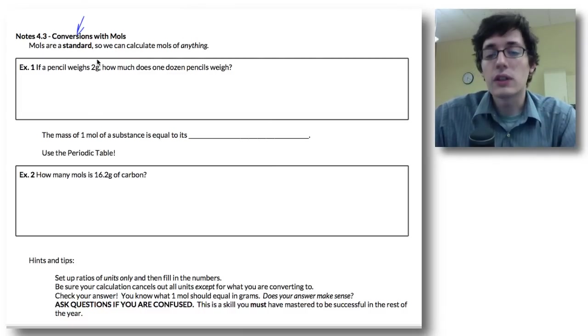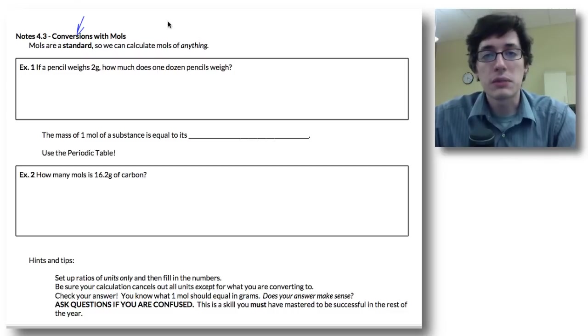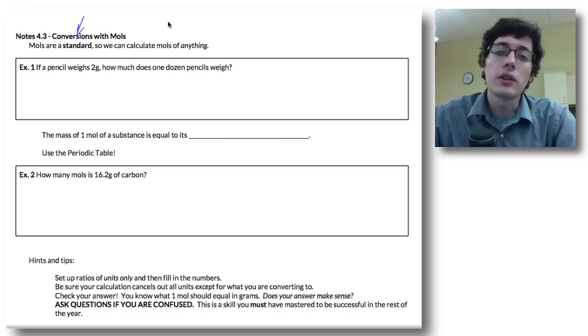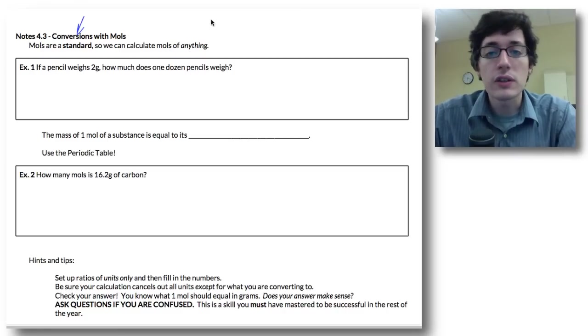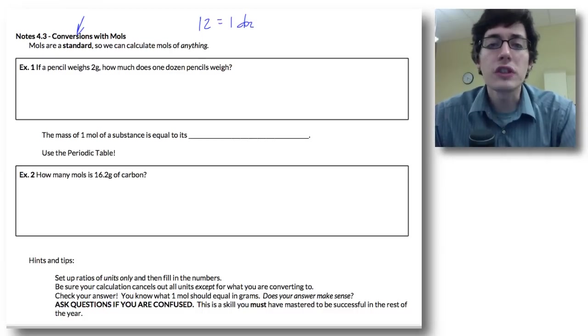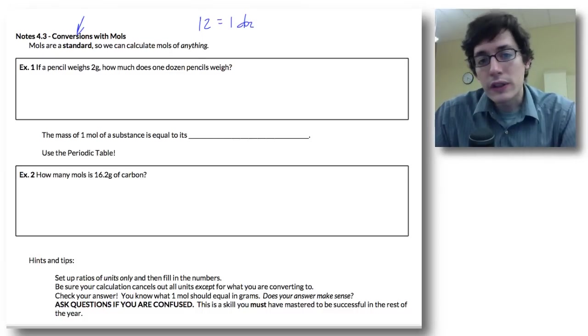Remember, a mole is a standard. It is always going to be 6.02 times 10 to the 23rd, so we can use it to make chemical conversions when we're doing chemical equations. And this is kind of the same as a dozen is always equal to 12. So that conversion is never going to change. A mole works the same way.